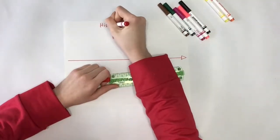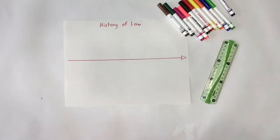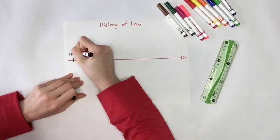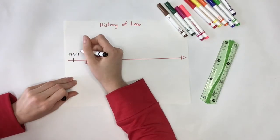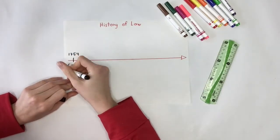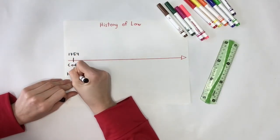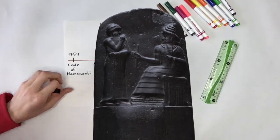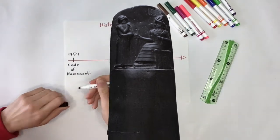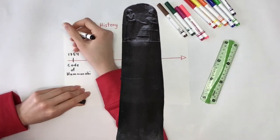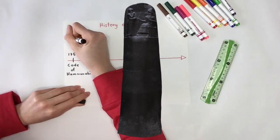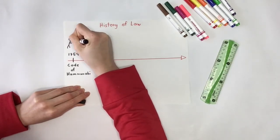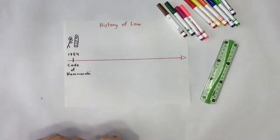The Code of Hammurabi is a collection of some of the earliest laws on record. These laws were carved into stone — one such stone can be seen in the Louvre Museum in Paris. Hammurabi wanted the rules for his civilization to be accessible for all, and had all 282 laws and the consequences of breaking them carved into stone.